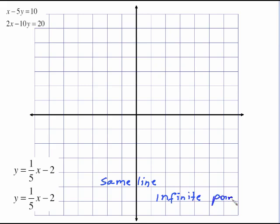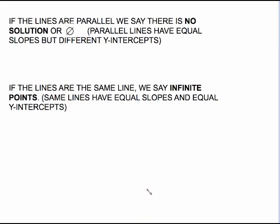So those were our two special situations. Here's a little conclusion. If the lines are parallel we say that there is no solution or you may use the empty set symbol. Reminder, parallel lines have equal slopes but different y-intercepts. If the lines are the same line we say that we have infinite points of intersection. Same lines have equal slopes and equal y-intercepts.